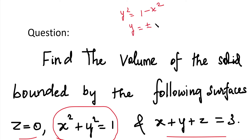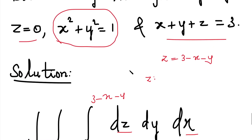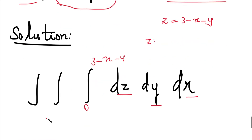Taking the square root of both sides, we get y equal to plus or minus root of 1 minus x². The minus value gives the lower limit and the plus value gives the upper limit. So y varies from minus root of 1 minus x² to plus root of 1 minus x².